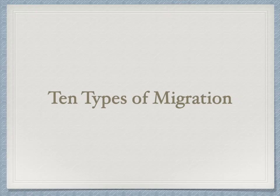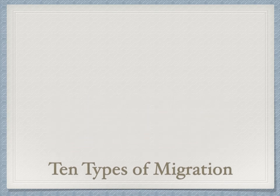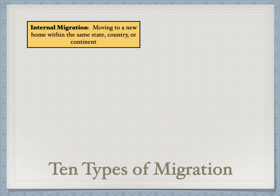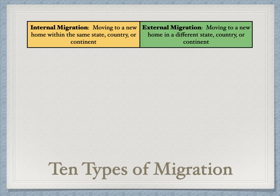There are ten different types of migration. You probably won't need to know all of them, but here they are for a better understanding. Internal migration is moving to a new home within the same state, country, or continent. External migration is moving to a different state, country, or continent — and you can see how the distinction depends on scale.